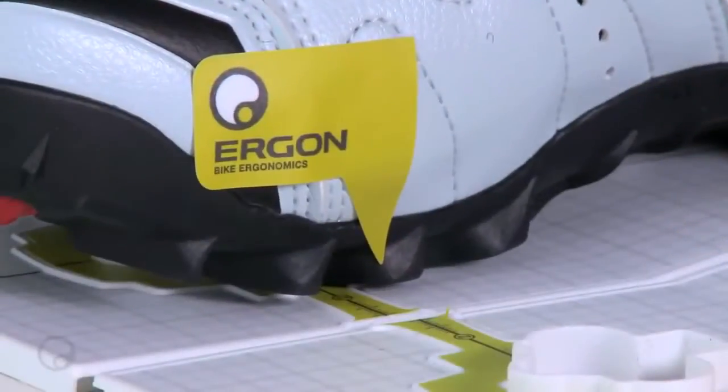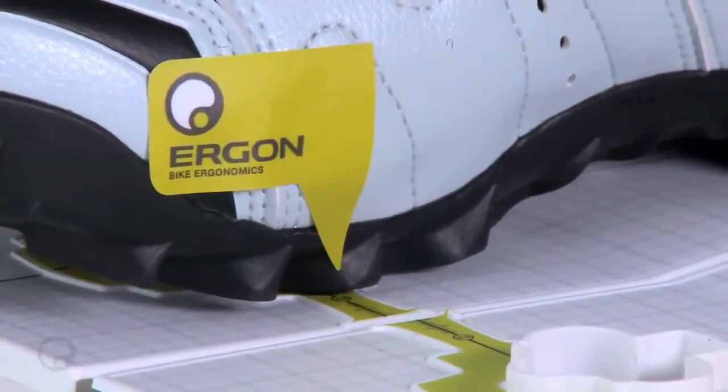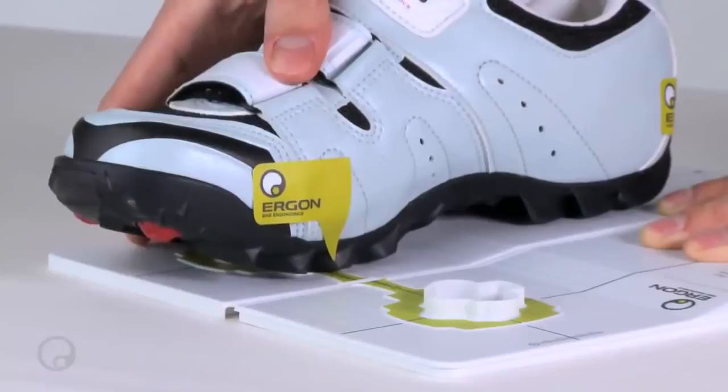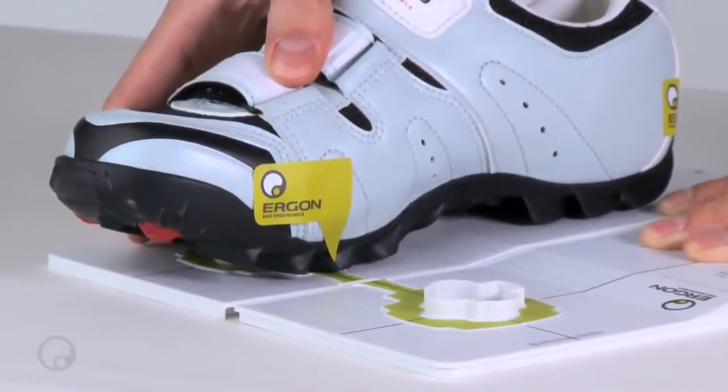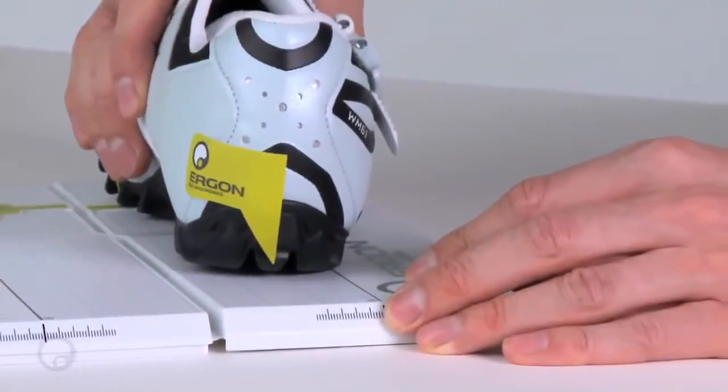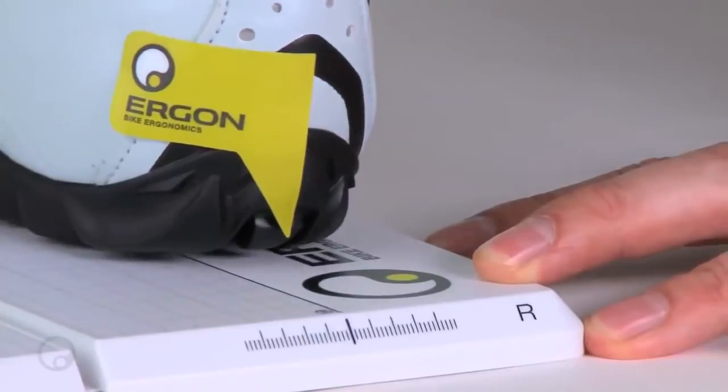Start by setting the fore aft position of the cleat. Then adjust the Q factor. This is the distance between your feet. Finally, set the angle or rotation of the foot.